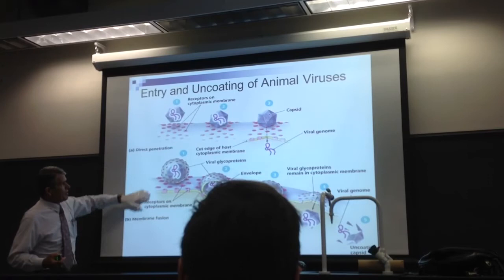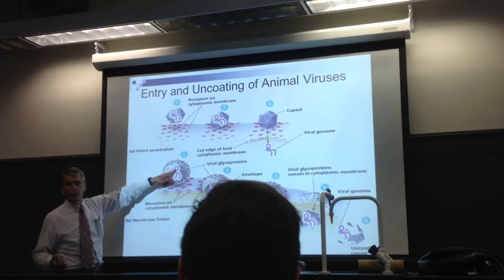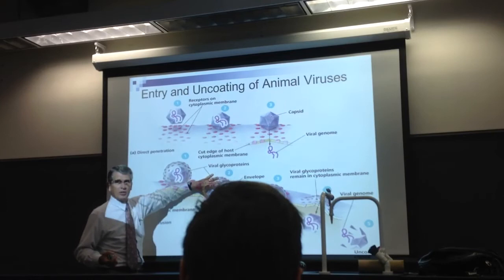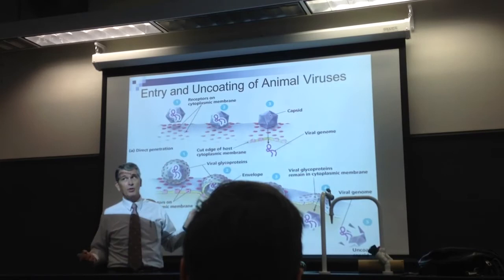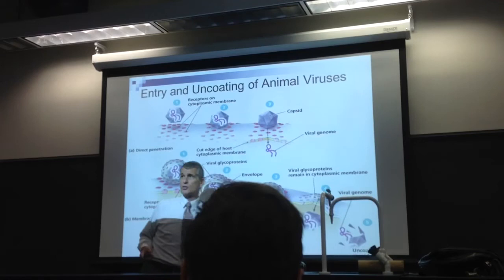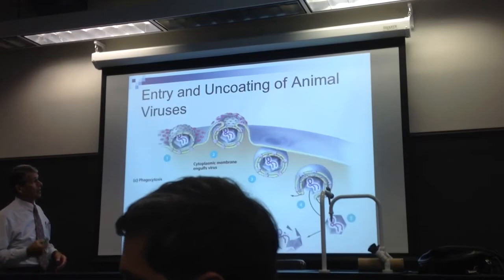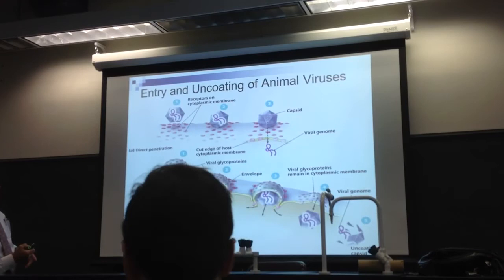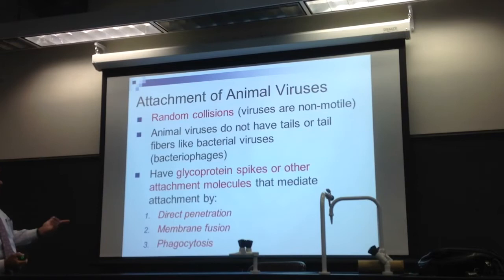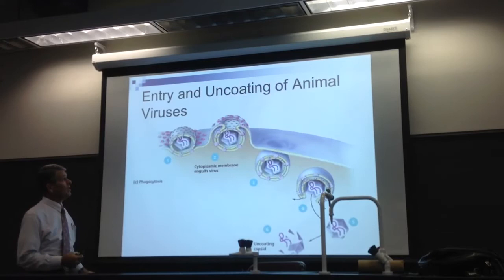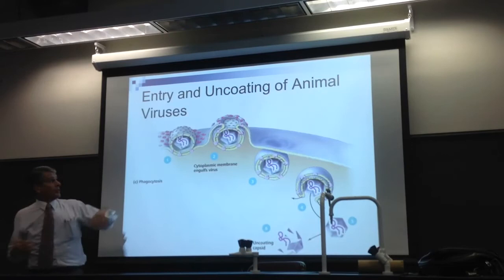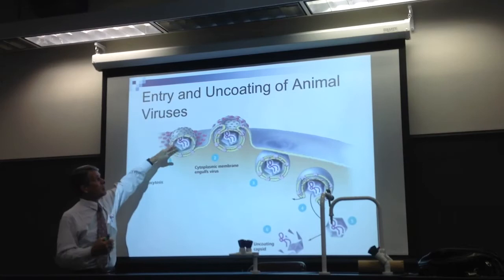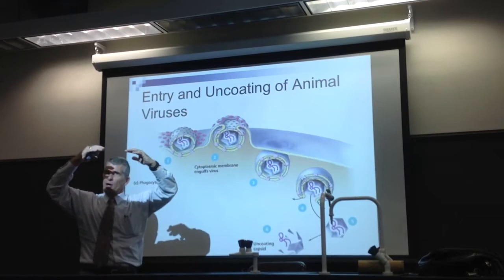Membrane fusion: we've got this lipid bilayer, with complementary receptors. It attaches, and because these membranes are very similar, they fuse and the virus enters. Third is phagocytosis — the virus particle is engulfed. Similar lipid bilayers, receptors are matching this virus. There is an invagination surrounding that virus, it engulfs it, brings it in, and then the virus is released inside.